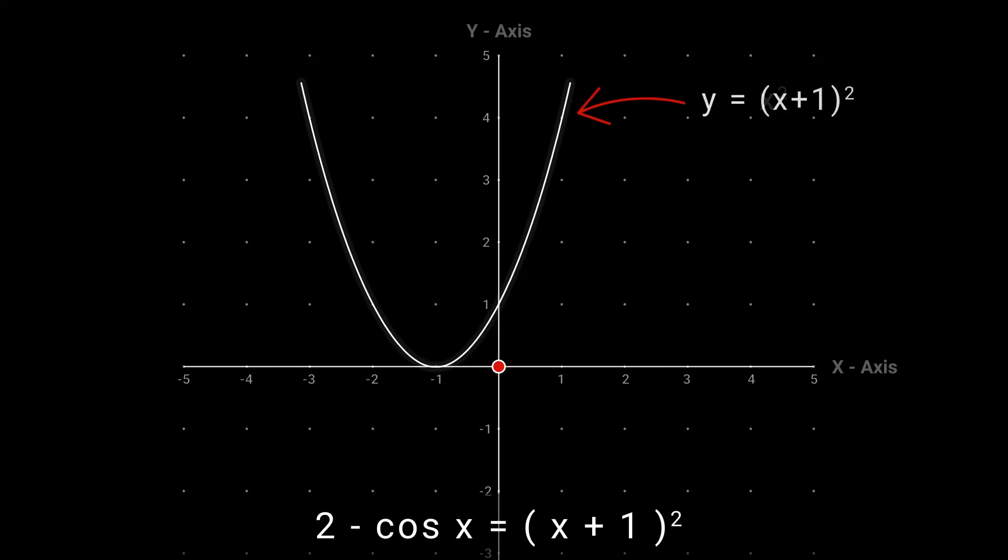So this is the graph of y equal to x plus 1 whole square. Now draw y equal to 2 minus cos x. We have to first draw y equal to minus cos x, which can be done by rotating the graph of cos x by 180 degrees about the x-axis.